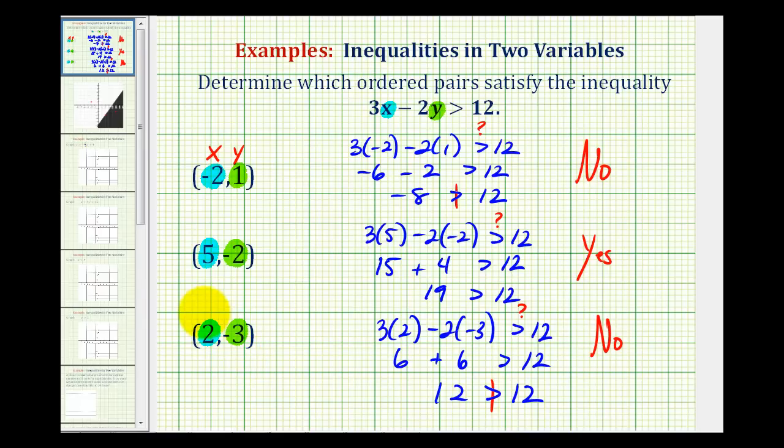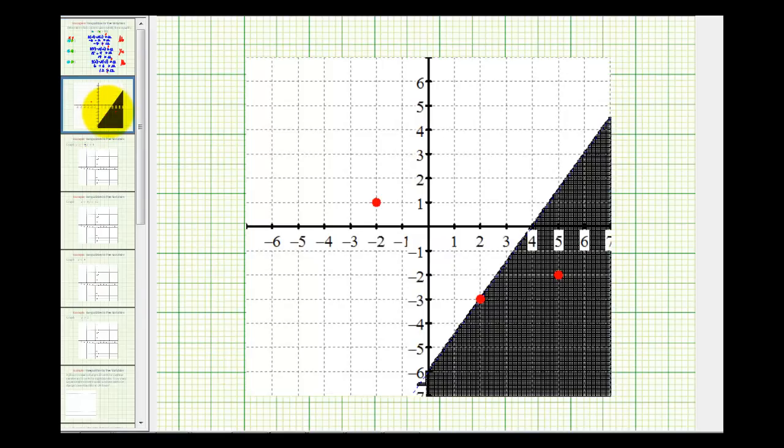Now let's take a look at this graphically. Here's a graph of our inequality. Remember, any point in the shaded region would satisfy the inequality. It didn't come out very well, but this is actually a dashed line.